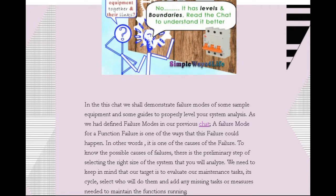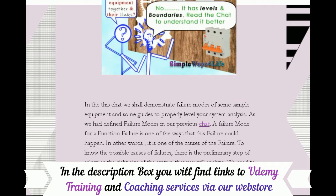Once I can approach the failure, I can repair it, replace the part, and put a countermeasure to prevent this failure from recurring outside the scheduled time. That's the RCM analysis: you analyze the function, the function failure, how the failure occurs, and what the causes — the modes — of this failure are. Then I prioritize the failures and set a time schedule, or simply classify a failure as requiring no scheduled maintenance.